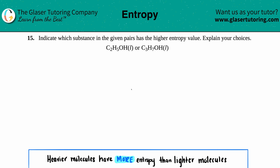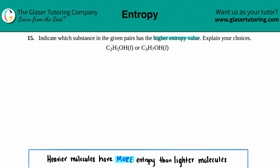Number 15: indicate which substance in the given pairs has the higher entropy value, and then explain your choices. Here's our first set — we have C₂H₅OH liquid or C₃H₇OH liquid. There are basically two different reasonings behind why one molecule would have a higher entropy value over another. The first and easiest thing is to always look at the states first, but in this case they're both liquids.